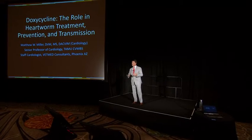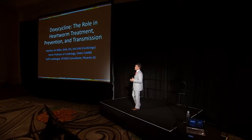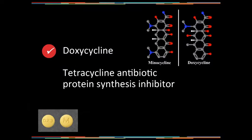Less commonly, we talk about doxycycline relative to prevention, and probably fewer pay attention to doxycycline's role in transmission. Doxycycline is a tetracycline antibiotic, used most commonly for management of other infections including rickettsial infections. It's a protein synthesis inhibitor, effective against many bacteria as well as rickettsial organisms. In times when doxycycline is difficult to obtain or too expensive, minocycline has been used, and some studies suggest it may be equally effective in heartworm disease management.